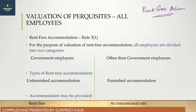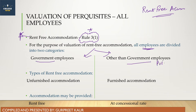The first thing is rent-free accommodation, which is under Rule 3.1. When we talk about employees, employees are divided into two categories: Government employees and Non-Government employees. They may also be provided furnished accommodation, so that calculation is very important.